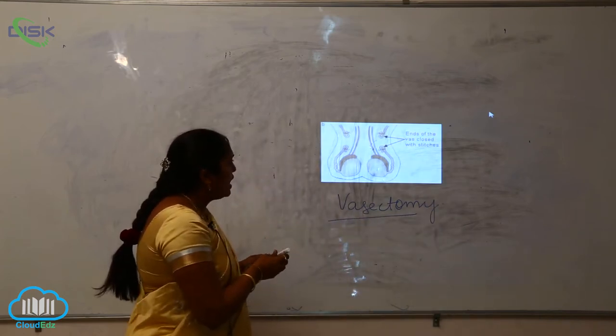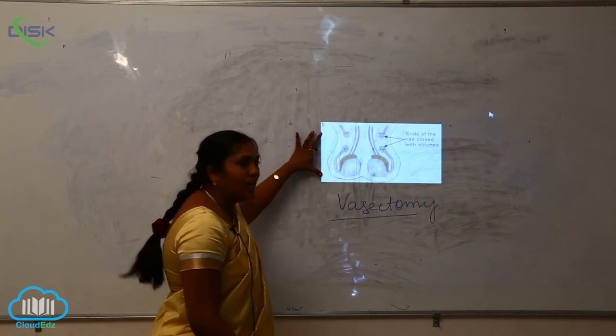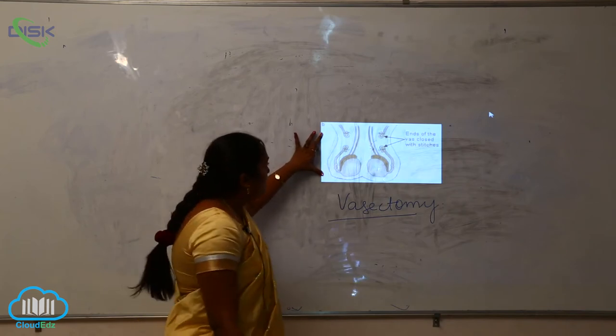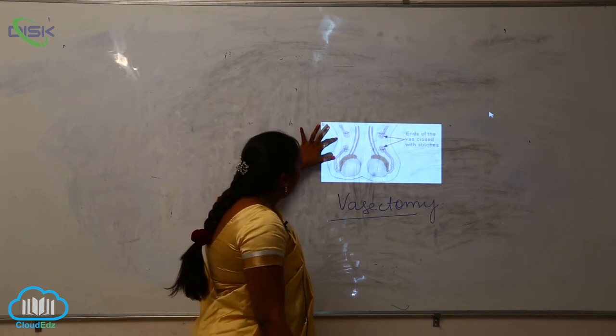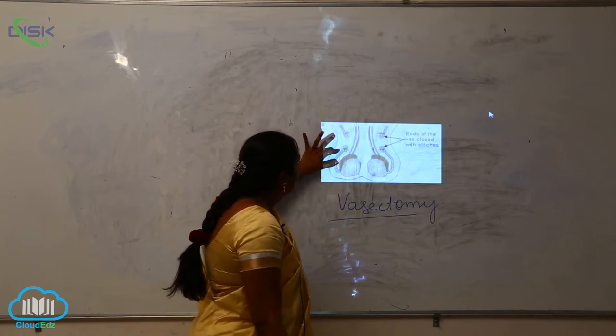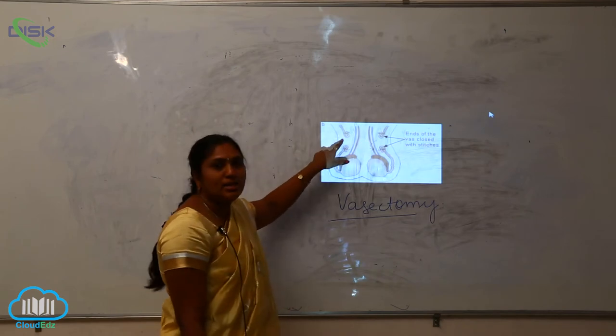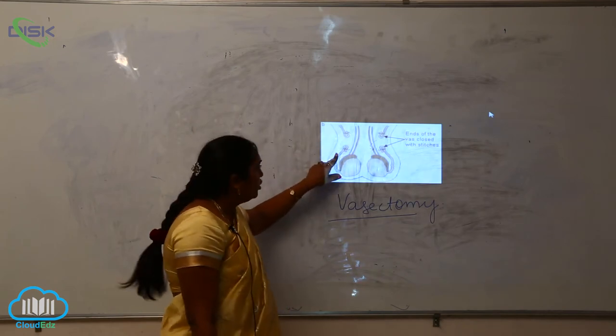So here what is happening - as you know, this is the male reproductive system. The actual procedure involves the vesicles - the seminal vesicles or the vasa efferentia - which will be cut and stitched, as you can see in this diagram.